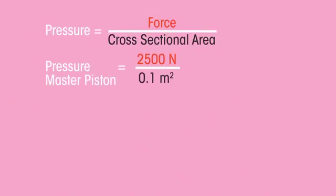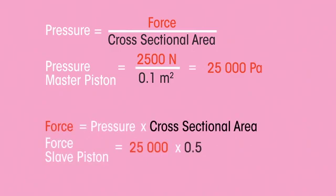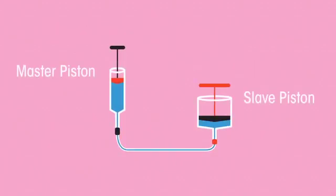So the pressure produced by the master piston is 25,000 pascals. And so the force produced by the slave piston is 25,000 times 0.5 meter squared giving 12,500 newtons. That's a massive increase in force from the original 2,500 newtons applied to the master piston to the 12,500 newtons produced by the slave piston. The science of hydraulics is due to Pascal's principle.